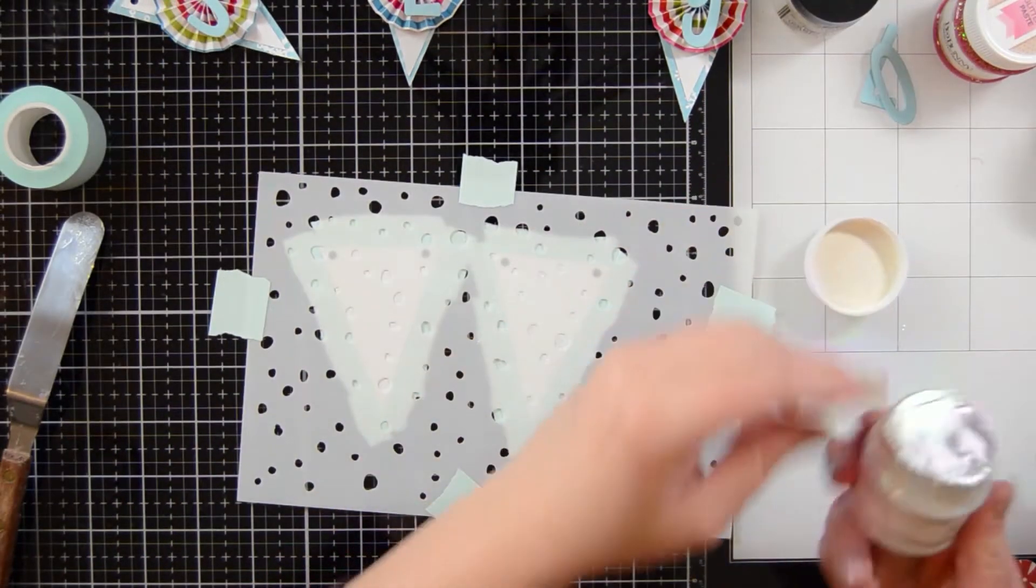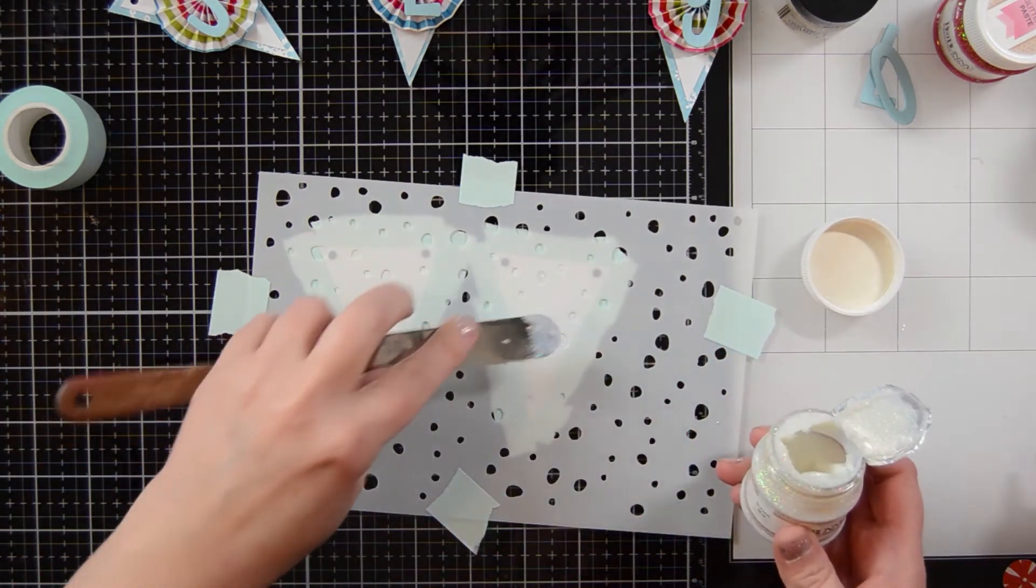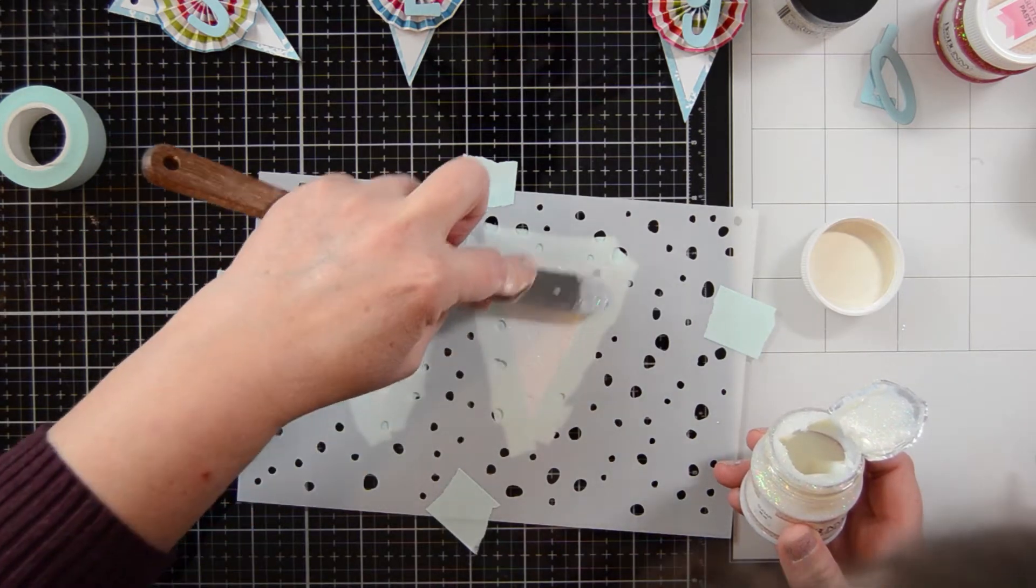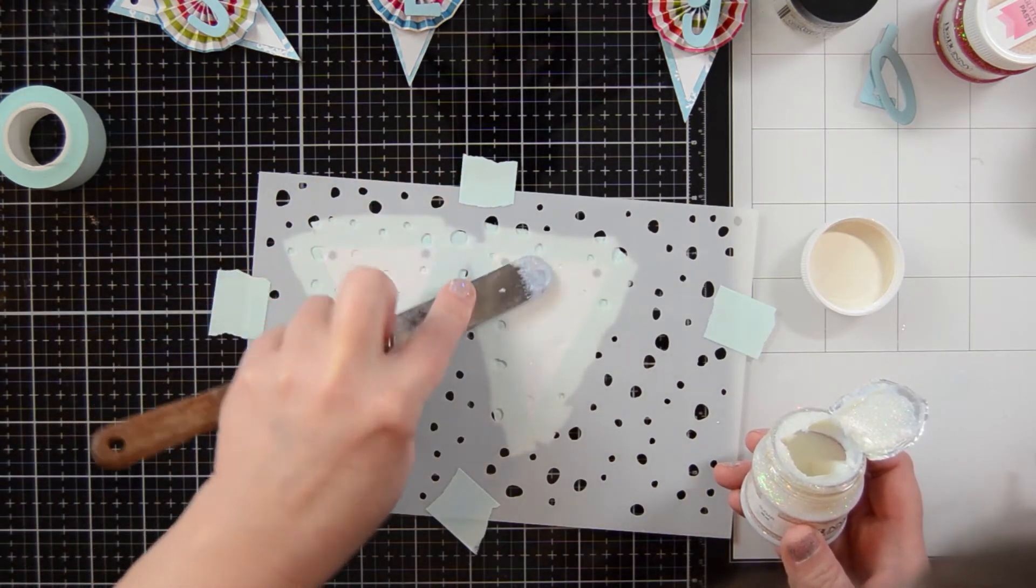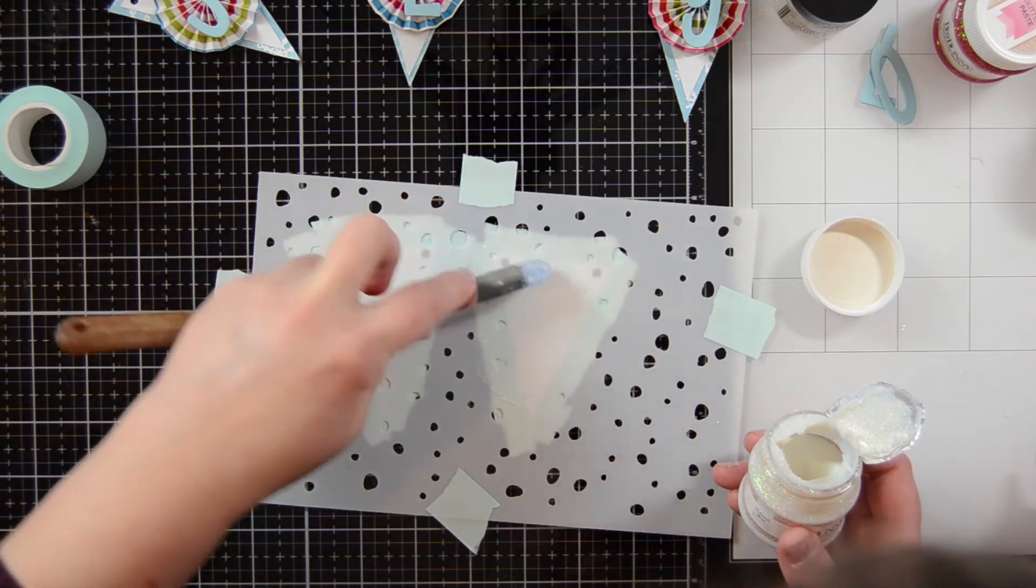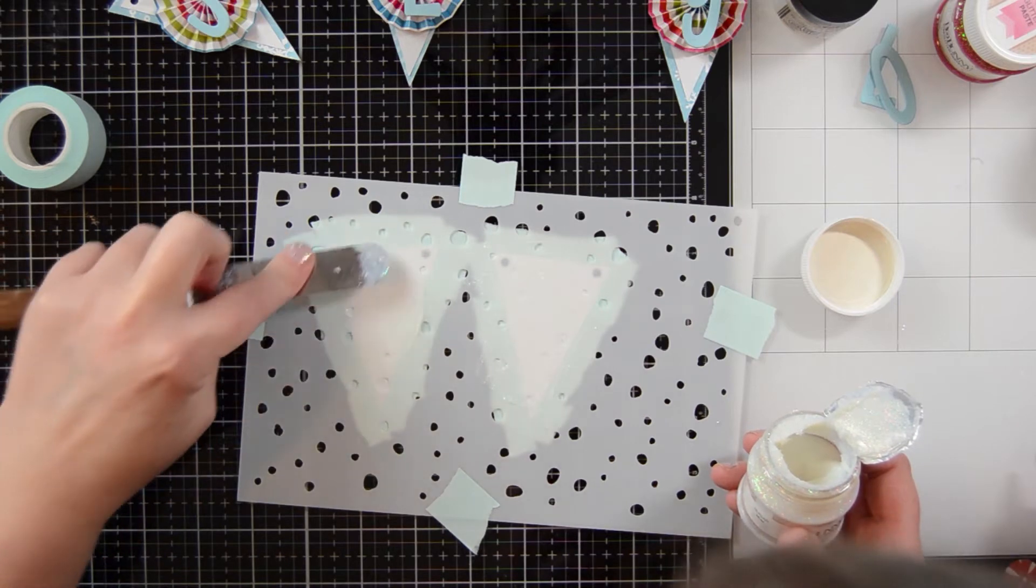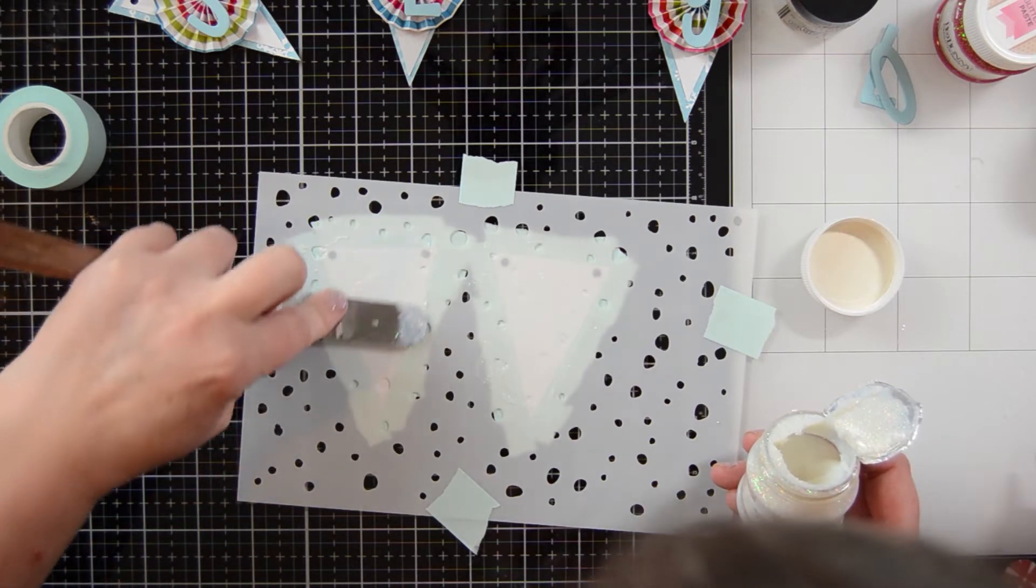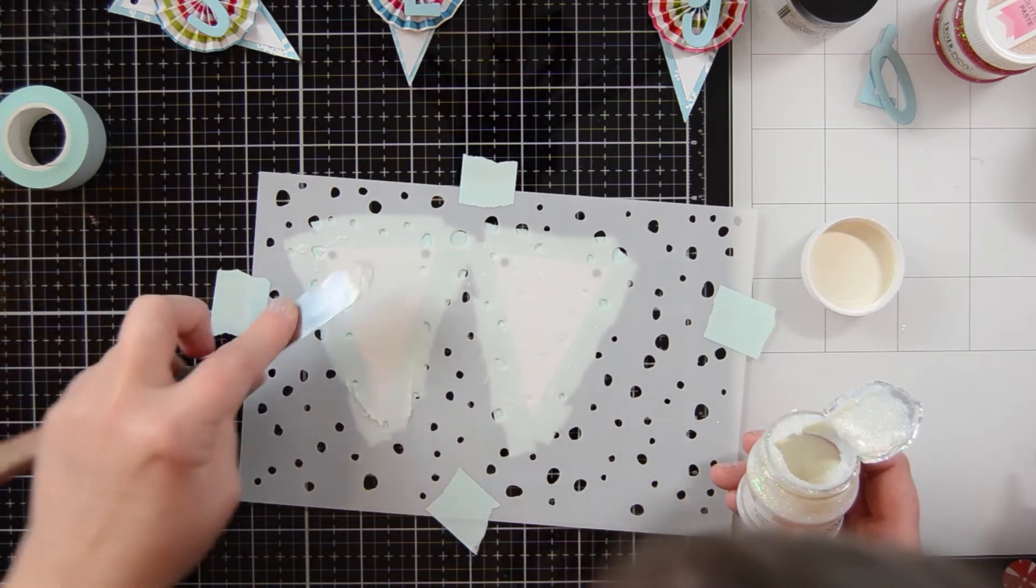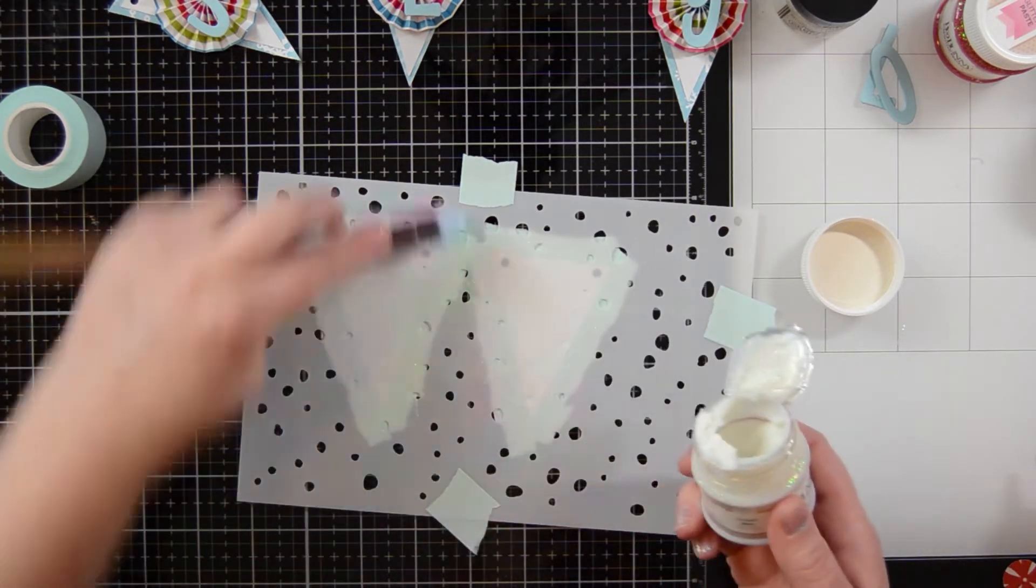So I use some of this Bow Bunny glitter paste. I really like how fine the glitter is in it. It works really well for these smaller snow holes. So I'm just going across it evenly, covering the little holes on each one of these banners. And this stuff dries pretty fast. So once you're done with this, you can take your stencil off and it will dry within a few minutes.